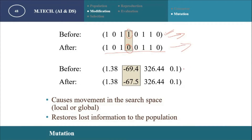In some special cases, there is a possibility of large changes in fitness values, but in most normal problems, if there is a small change in one gene, the fitness value won't change much. These are the same type of mutation happening across different types of individual or chromosome representation.